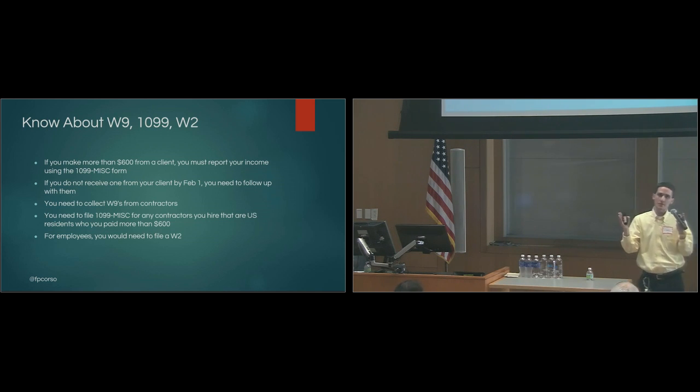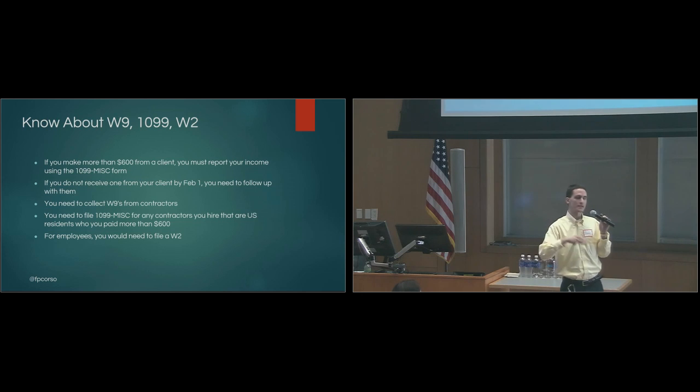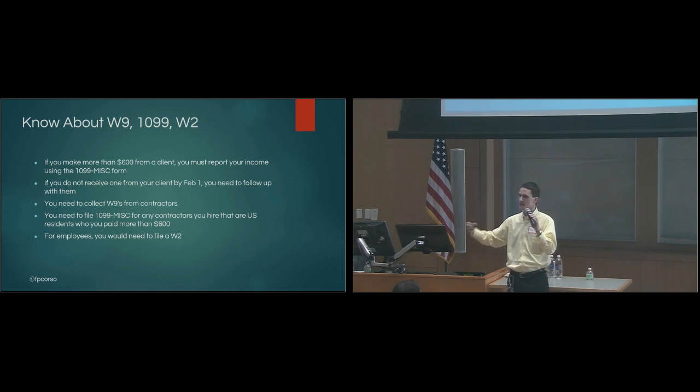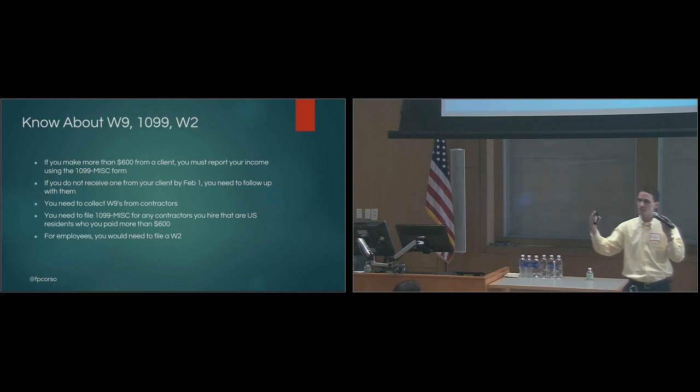So if you make more than six hundred dollars from a client, usually they're going to ask for something called a W9. And that's where you're going to fill out this paperwork just saying who you are. And then the 1099 form is what says, hey, this is how much I've paid this person. So essentially, same thing on the opposite side. If you have a contractor, if you have lots of work and you hire on a designer or you bring on maybe a developer, and you have some work to send to them, you would do this the opposite way. You would collect a W9 from them, and then issue them a 1099 if they have over six hundred dollars throughout that year. And then at the end of the year when they're doing taxes, they're going to use their 1099s.